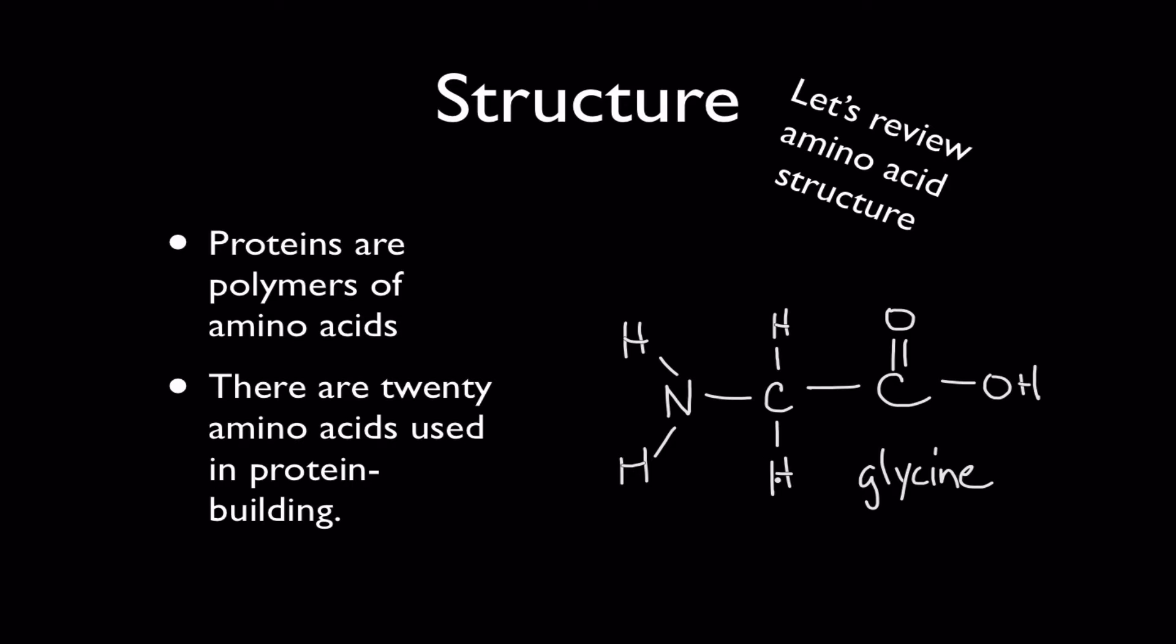So in general these are called side chains. So one of the ways that you make the 20 different amino acids that I referenced over here is that you just change what goes right here. What's hooked right here. So you can hook any number of different things onto here to make 20 different amino acids and they all have slightly different properties of course.